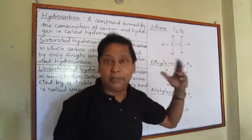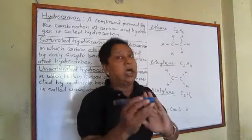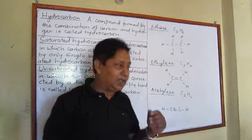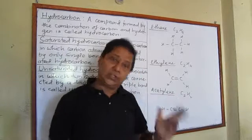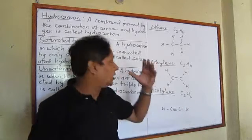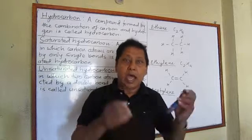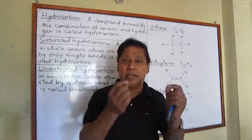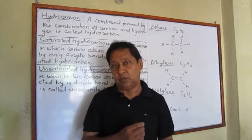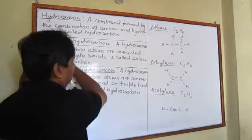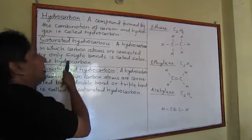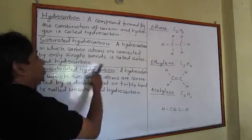But there may be more than two carbon atoms. When carbon combines with hydrogen to form a compound, that is called a hydrocarbon. It is of two types: one is called saturated hydrocarbon and another is called unsaturated hydrocarbon. A saturated hydrocarbon is a hydrocarbon in which carbon atoms are connected only by single bonds.